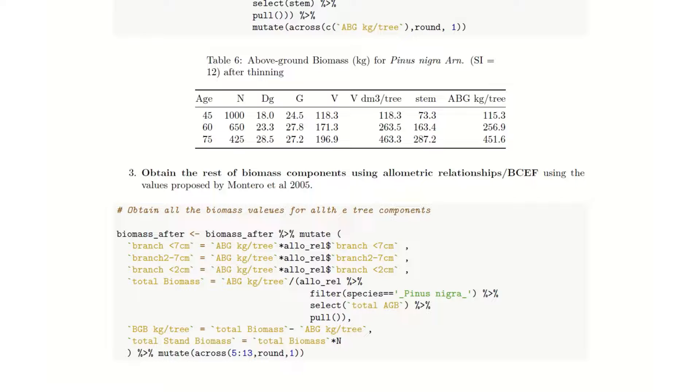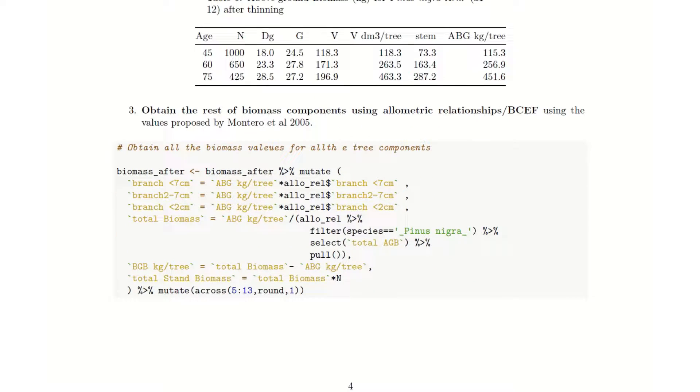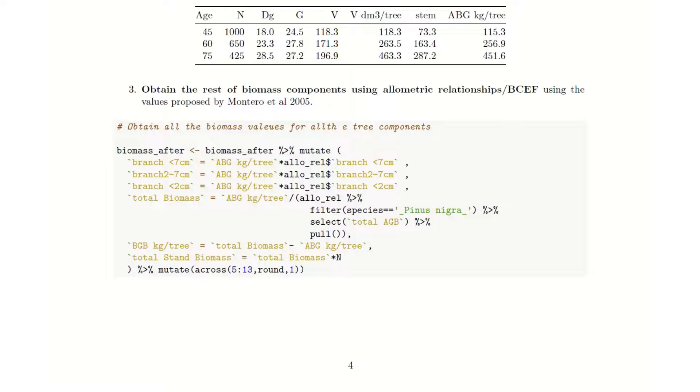Our next step is to obtain the rest of the biomass components using allometric relationships, or biomass conversion or expansion factors using the values proposed by Montero et al. in 2005. As you can see here, for each component, for each type of branch, we apply the allometric relationship to the above ground biomass, obtaining the biomass stored in each pool.